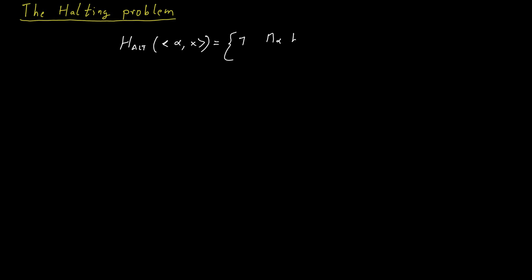And we then ask whether the machine M_alpha halts on this input X. If yes, we should return one. And if it doesn't halt, then we should return zero.